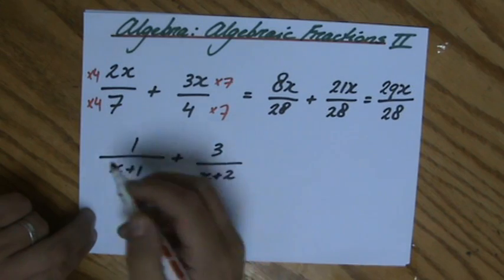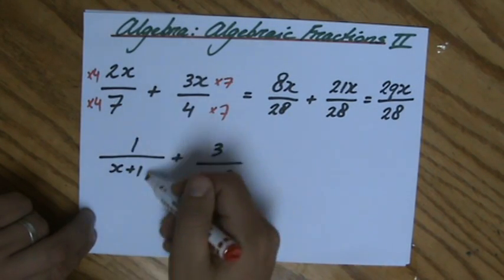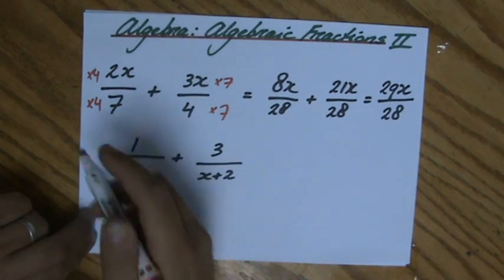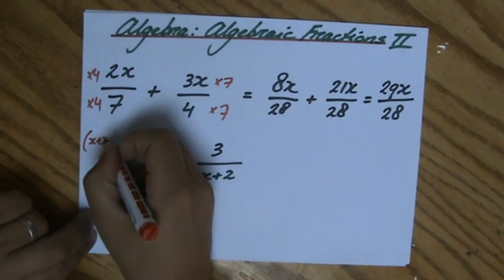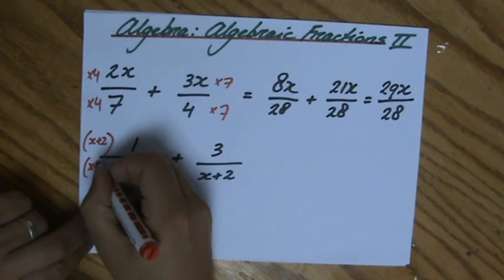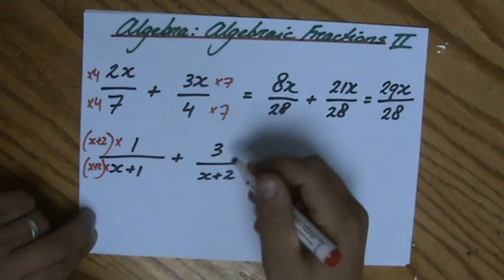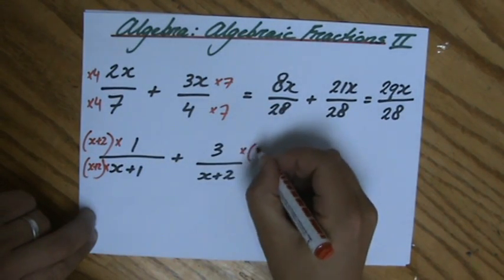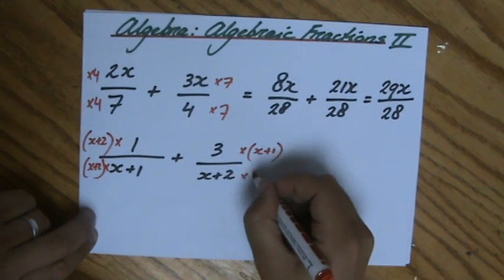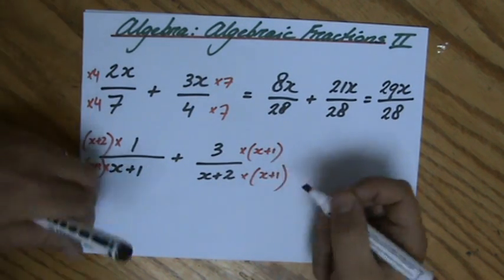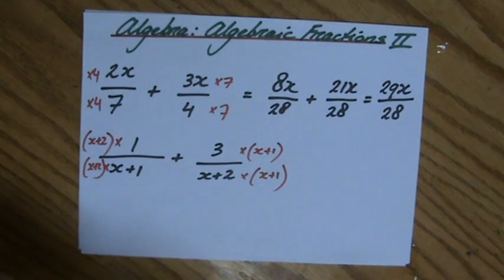What is the common multiple? Well, this fraction I'm going to multiply it by that denominator, so by (x+2), and put some brackets around that please, (x+2). And this fraction I'm going to multiply it by that denominator, which is (x+1), so times (x+1).